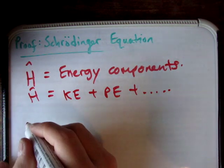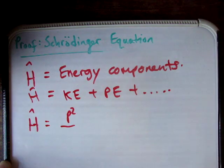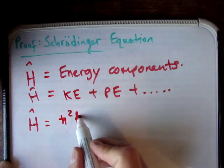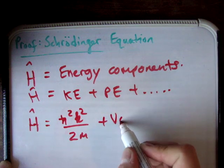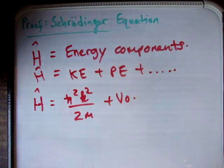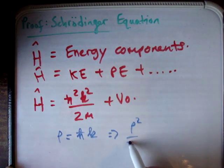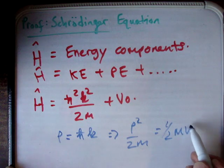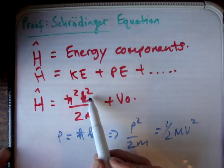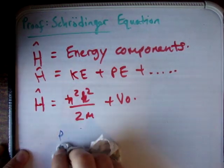In general the Hamiltonian we're going to be talking about is equal to h-bar squared k squared over 2m plus V0. You'll realize that the momentum p is equal to h-bar times k, and therefore what we have is p squared over 2m, which equals half mv squared — our kinetic energy. So this is just another way of writing kinetic energy, taking into account the fact that we're talking about waves, where k is the wave number.